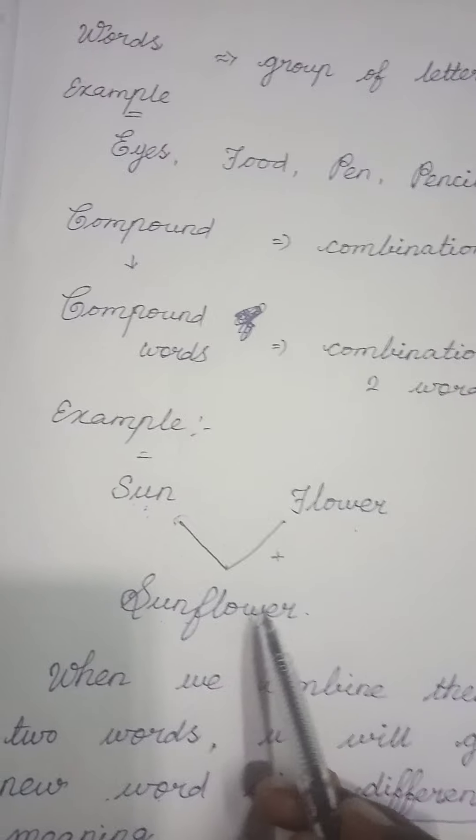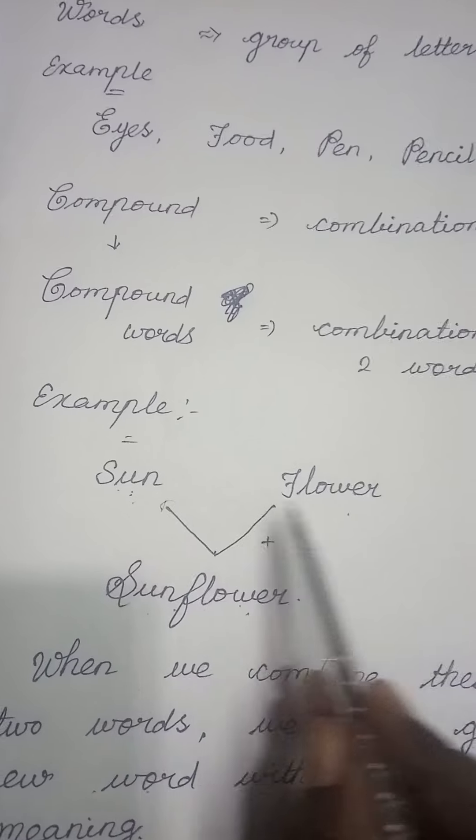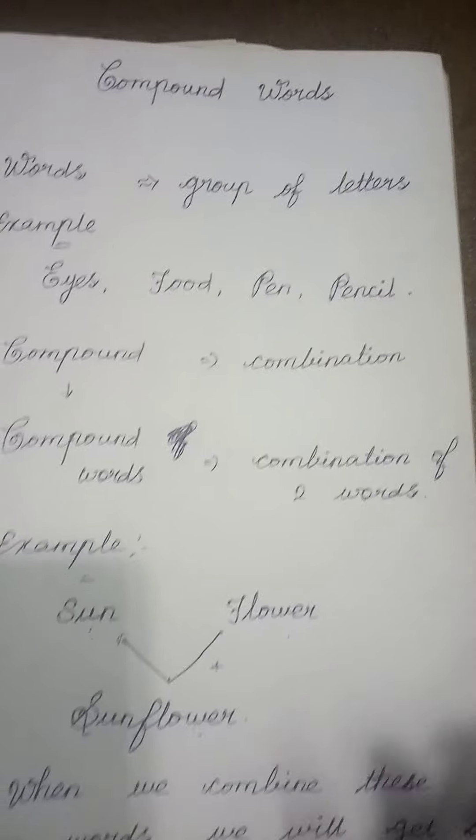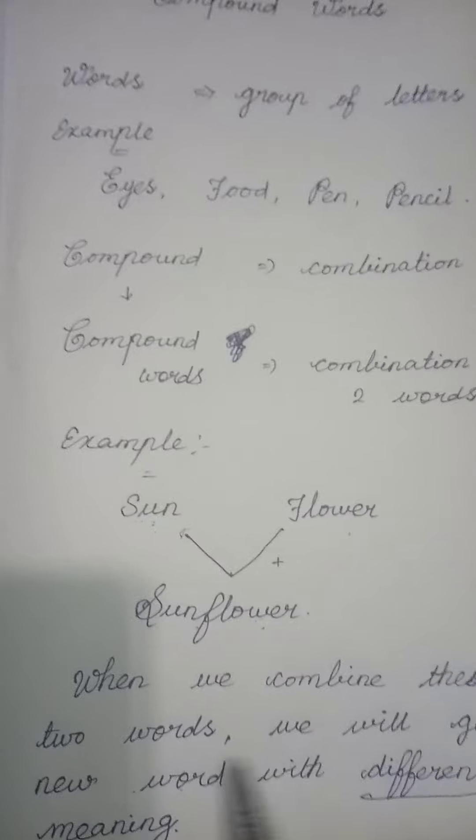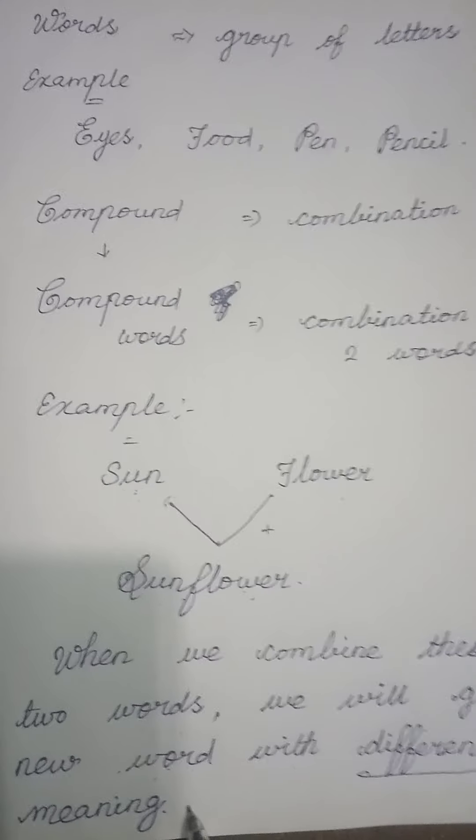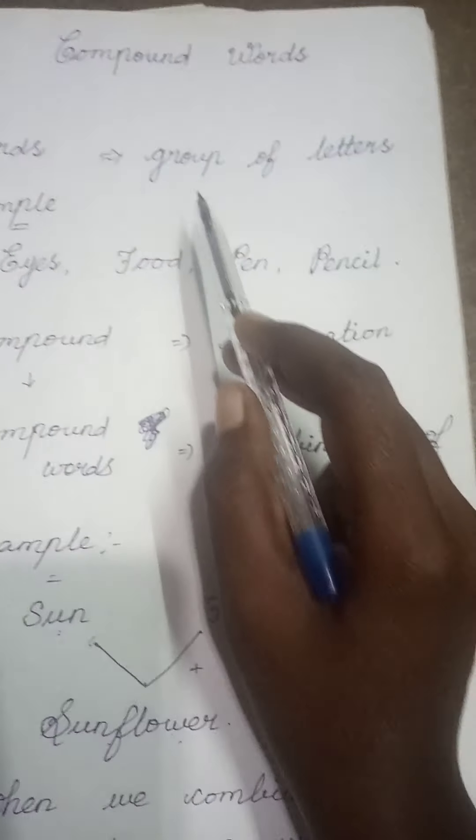Do you understand, my dear students? Sun, flower. If we combine, we will get sunflower. Okay, my dear students. When we combine two words, we will get a new word with different meanings. That is, compound words.